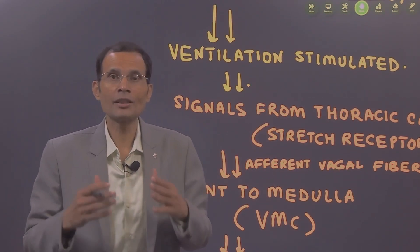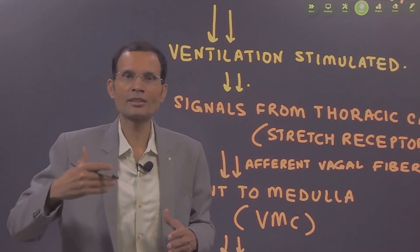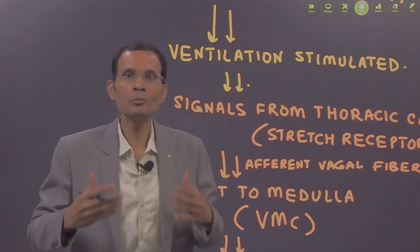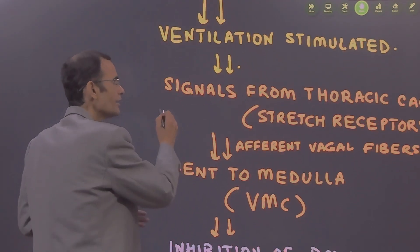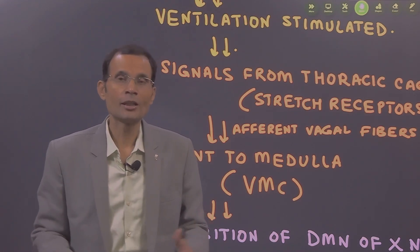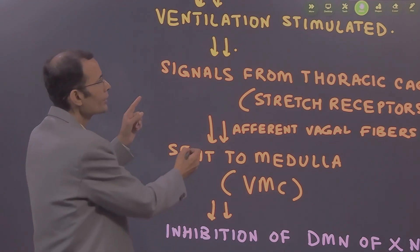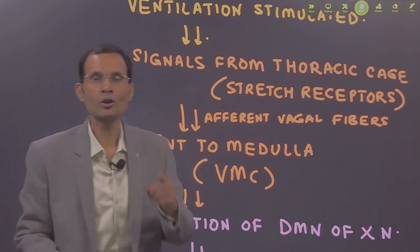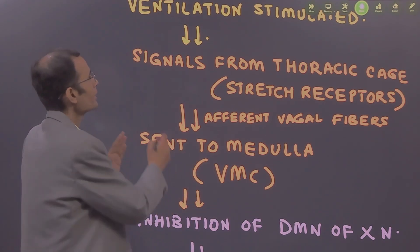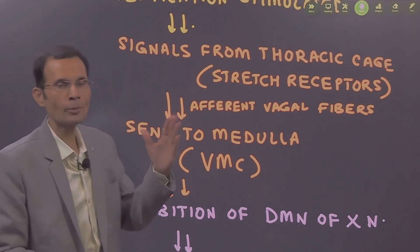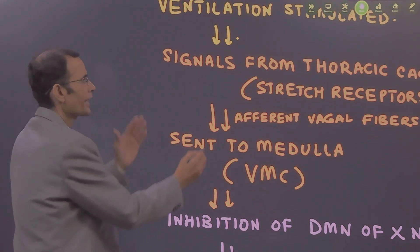As ventilation is stimulated, the rate and depth of breathing increase. There is greater movement of the thoracic cage and lungs, leading to a secondary reflex. Because of this greater movement, stretch receptors in the thoracic cage are stimulated and generate signals. This is the secondary reflex.